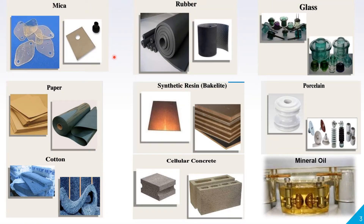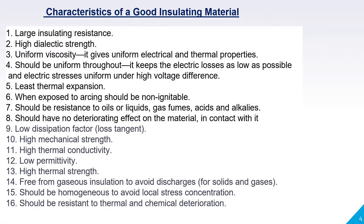Let's see different insulating materials: mica, rubber, glass, paper, synthetic resin, porcelain, cotton, cellular, mineral oil, etc. When we want to use insulating materials for different machines or appliances, it is said that the life of an electrical machine directly depends on the life of its insulation.